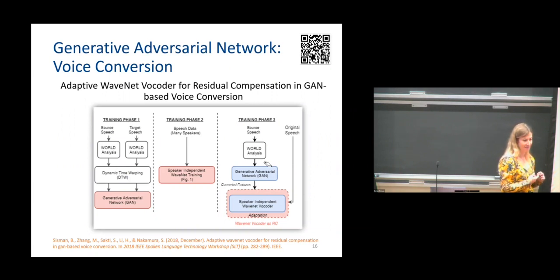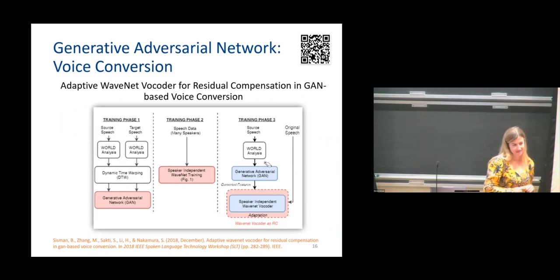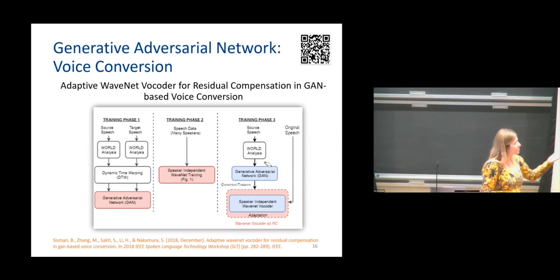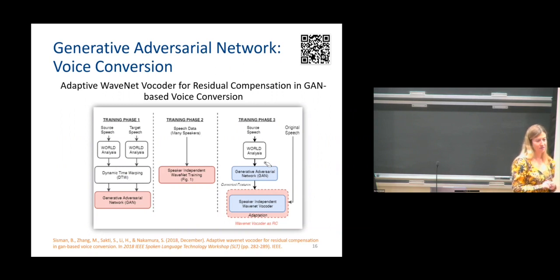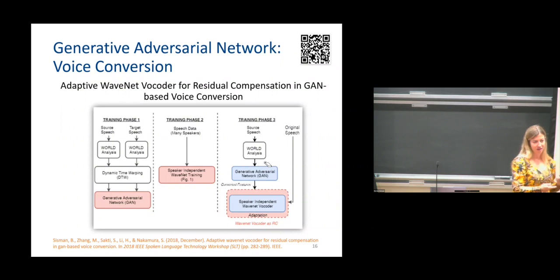So in summary: hundreds of sentences of parallel speech for phase one, tens of hours from many speakers for phase two, and around 50 to 100 sentences of target data for phase three. The main goal of phase three fine-tuning is to make the WaveNet vocoder handle the converted features, because when the features are converted the vocoder doesn't work that well — this fine-tuning step resolves that feature mismatch.